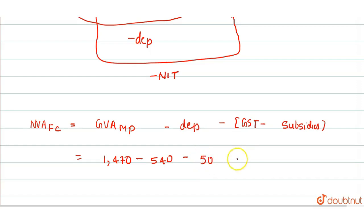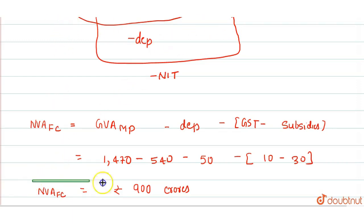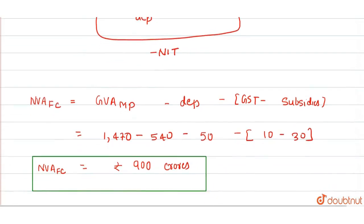Okay. Our GST is 10 and our subsidies are 30. So solving it all, the net value added at factor cost comes to 900 crores. This is our final answer: Net Value Added at Factor Cost is 900 crores.